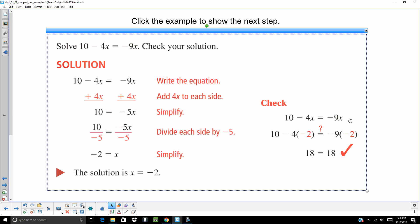And like always, I want to go back and I want to check that answer. So write the original problem down, take out that x, put in negative 2. You're going to end up getting 10 plus 8, which is 18. Negative 9 times negative 2, which is 18. Both sides of that equal sign equal each other.